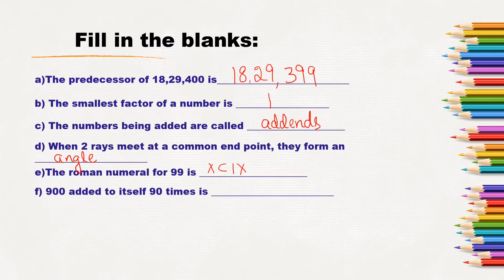Next: 900 added to itself 90 times is? 900 added 90 times is repeated addition, and repeated addition is nothing but multiplication. So we bring out 3 zeros and multiply 9 by 9. 9 times 9 is 81, so the answer is 81,000.